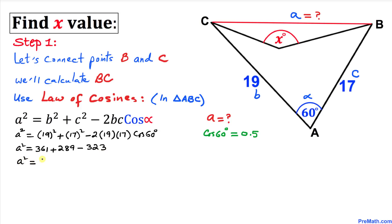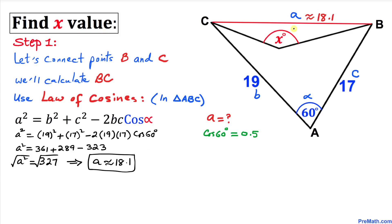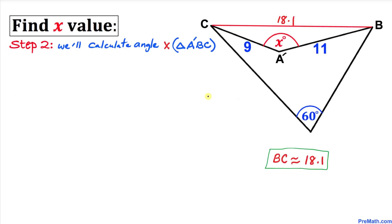So a² turns out to be 327. Taking the square root on both sides, a is approximately equal to 18.1. Thus our BC length turns out to be 18.1.